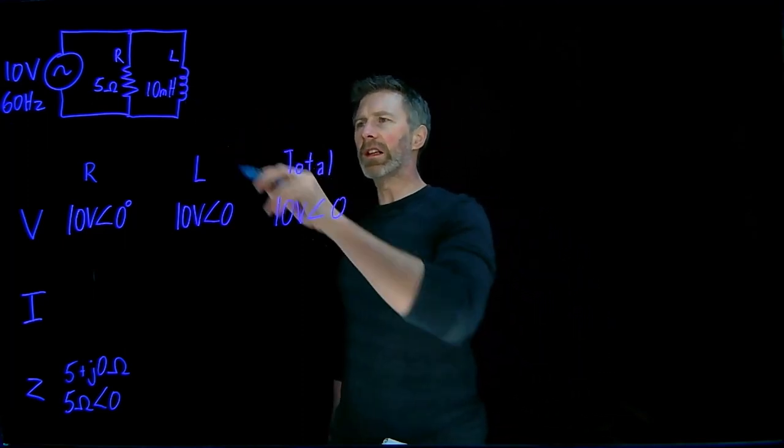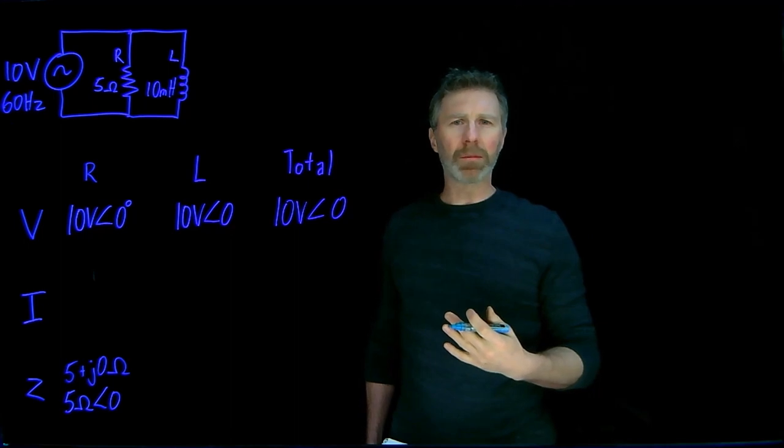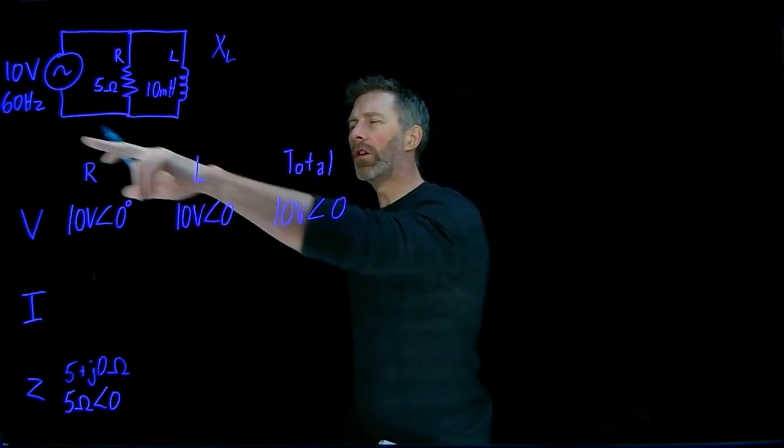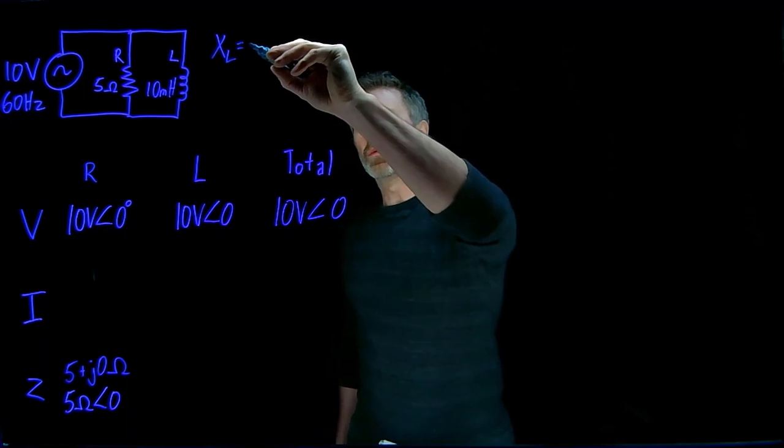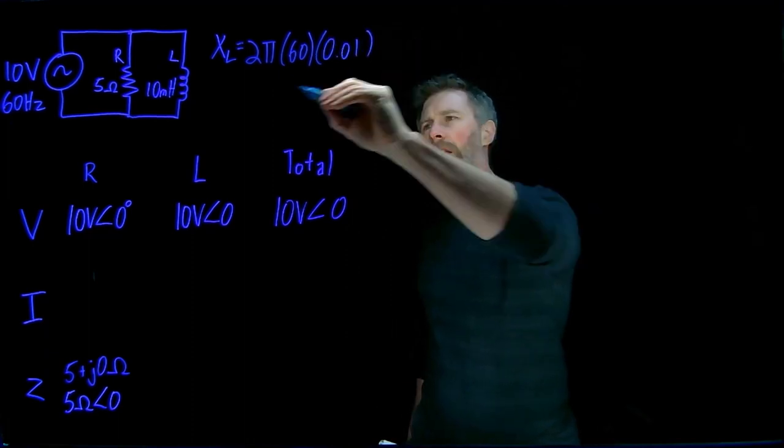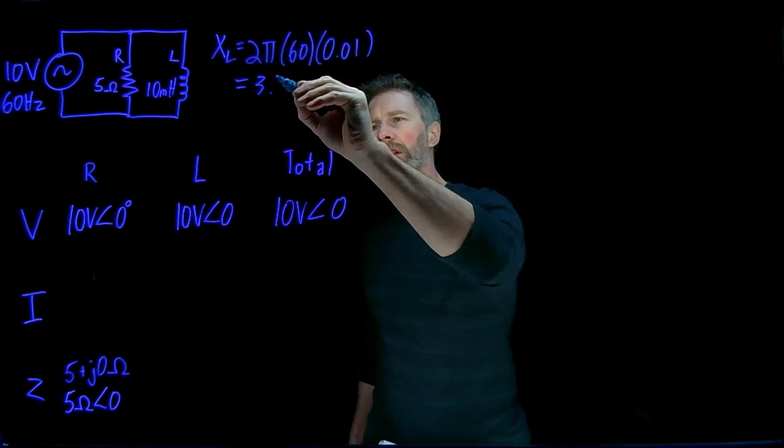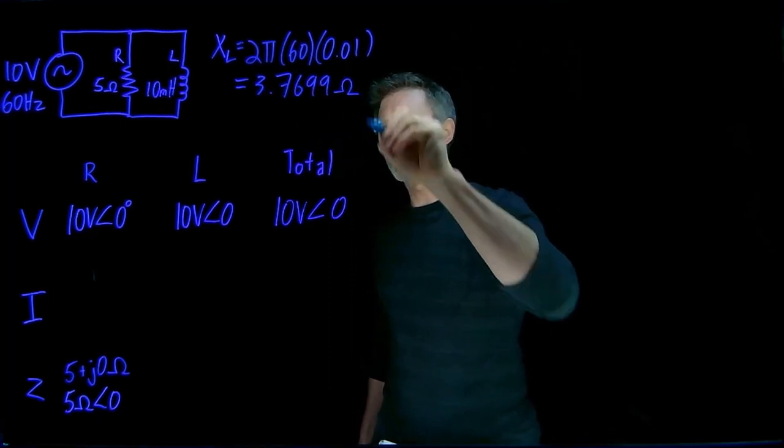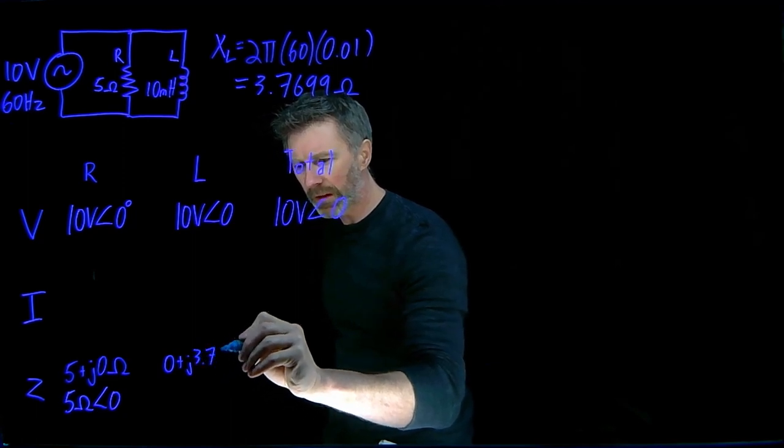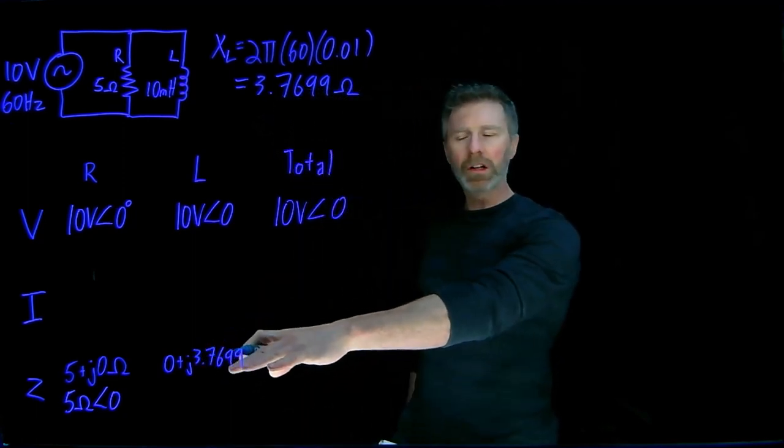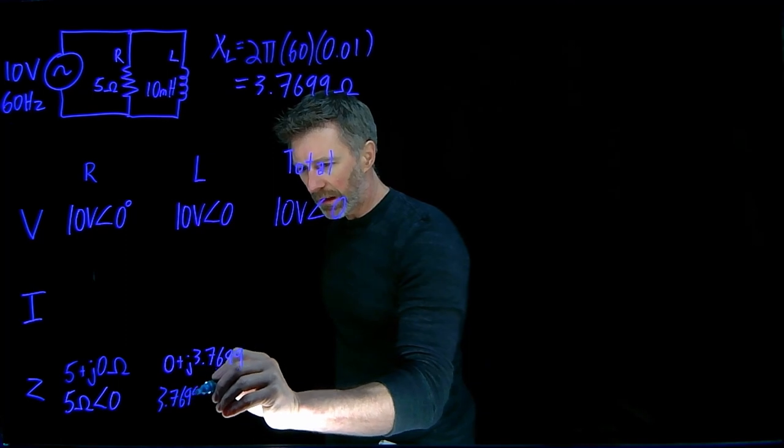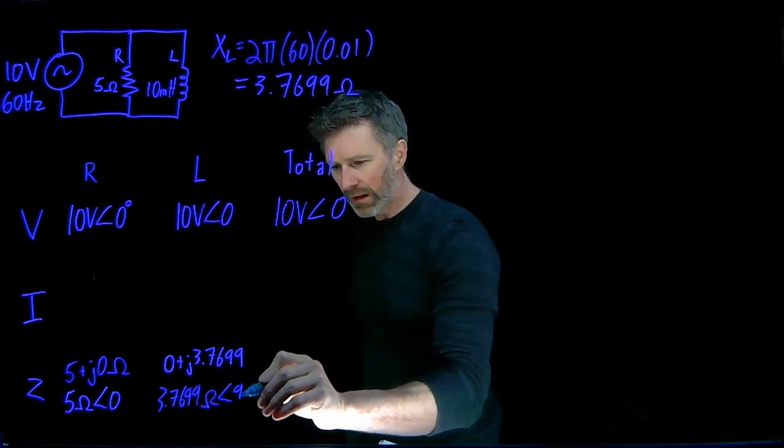For the inductor, we know the inductance is 10 millihenries, and we can convert that into an impedance starting with the reactance. We know the value of the inductor and that it's a 60 hertz system, so the reactance is going to be 2 times pi times the frequency times the inductance, which works out to 3.7699 ohms. As an impedance, this is zero plus j3.7699. It's all imaginary impedance, and in polar coordinates that is 3.7699 ohms with a phase angle of 90 degrees.